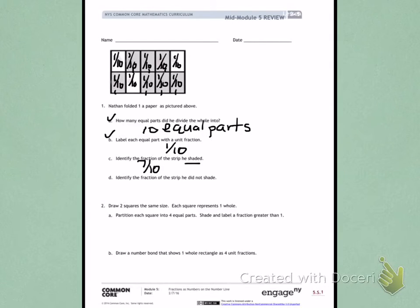Letter D. Identify the fraction of the strip he did not shade. Going back to the same picture, I see 1 tenth, 2 tenths, 3 tenths that are not shaded.